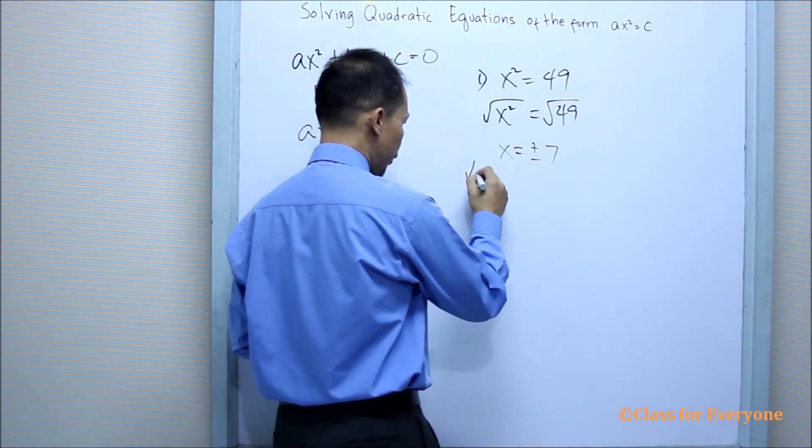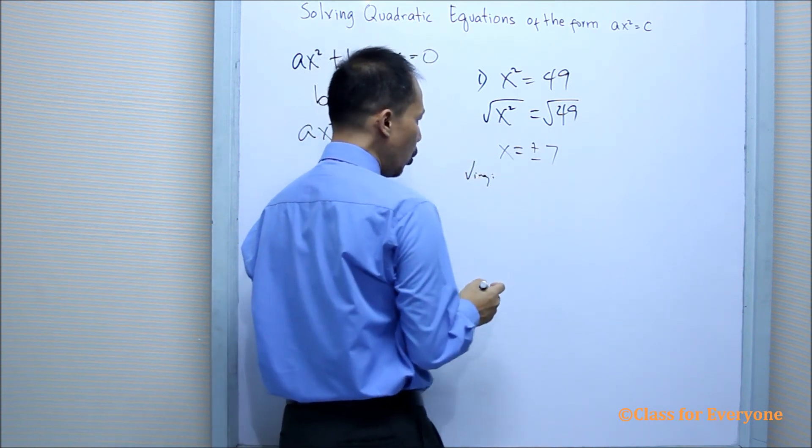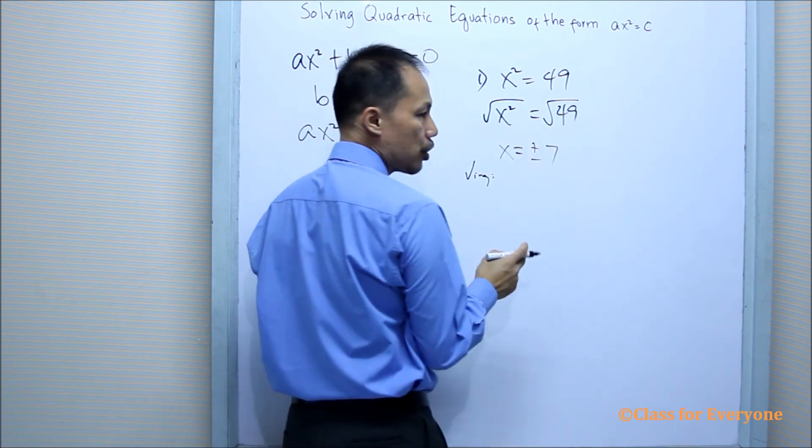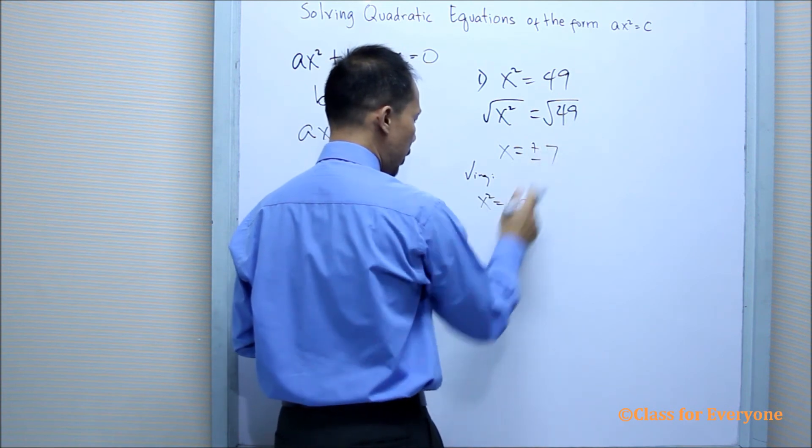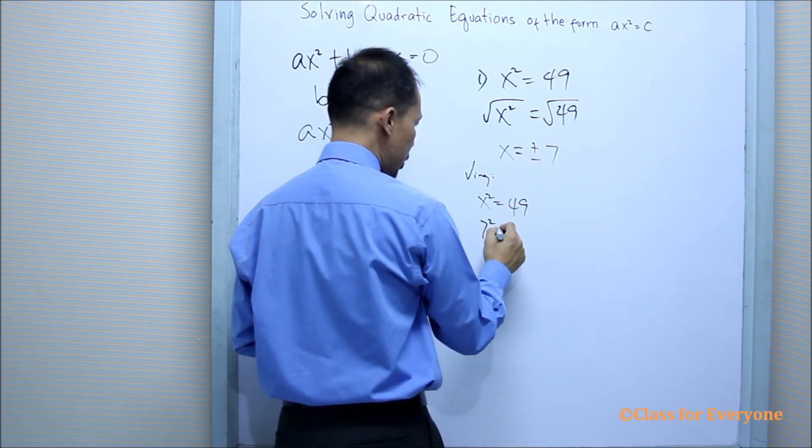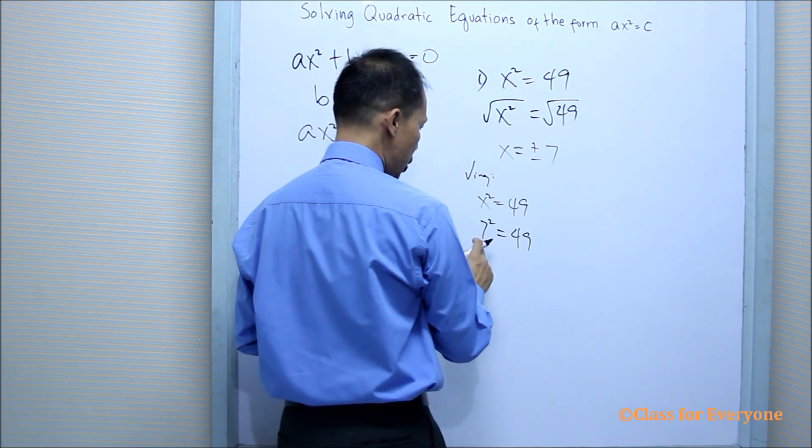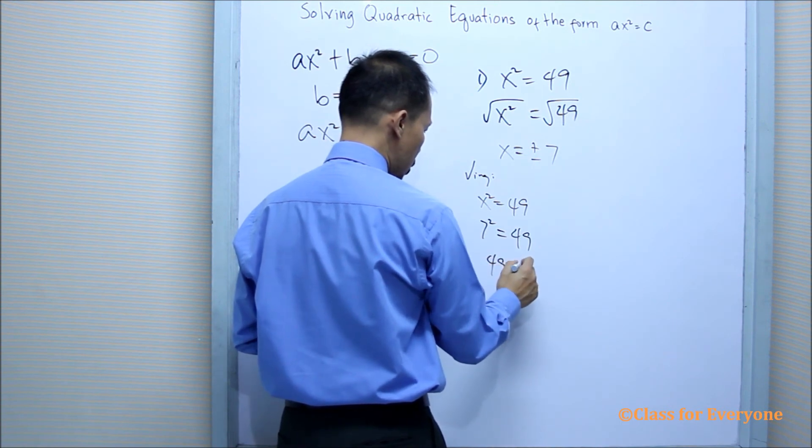Now, let us check each root. x² = 49, so we have here the positive x. That will be 7 squared, and 7 squared is 49.